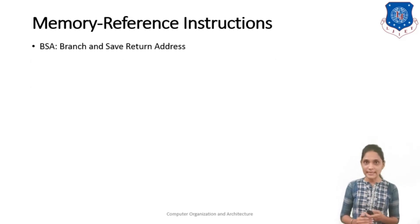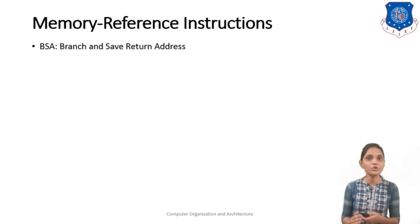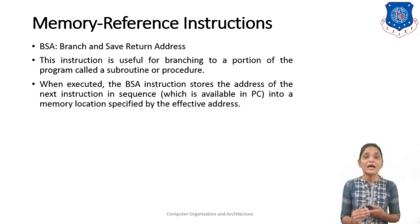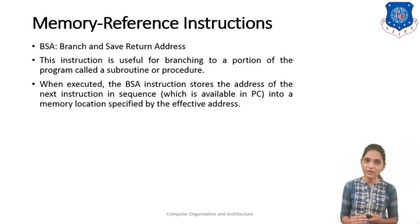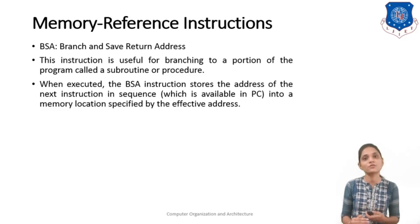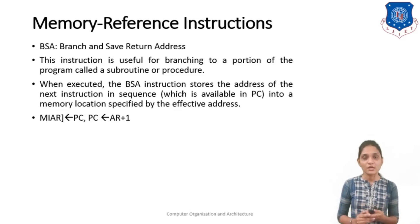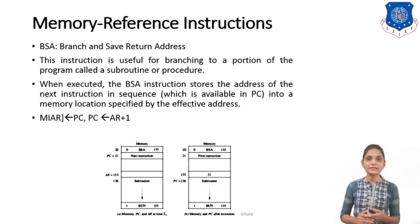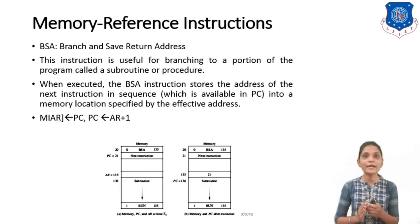Next is the BSA instruction — Branch and Save Return Address. This is also a branching instruction, but in BSA we are storing the return address, whereas in BUN we are not. This instruction is useful for branching to a portion of the program called a subroutine or procedure. When executed, the BSA instruction stores the address of the next instruction in sequence into the memory location specified by the effective address, and execution continues from the next address after that.